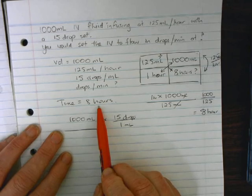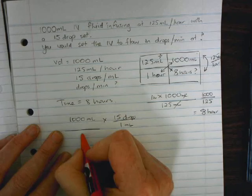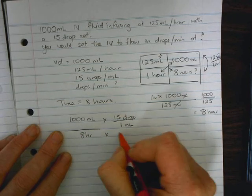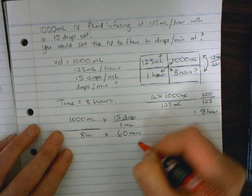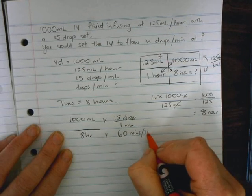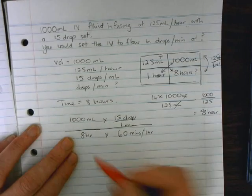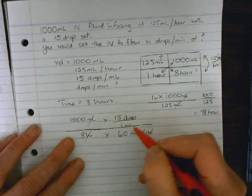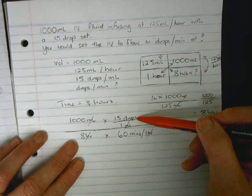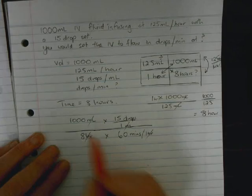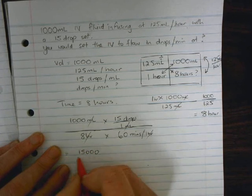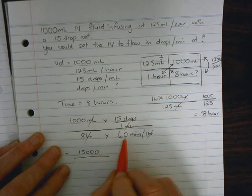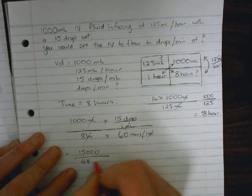And this is over our time in minutes, so 8 hours times 60 minutes, and it's 60 minutes per 1 hour. We can cancel our hours, cancel our mL, and our answer will be in drops per minute. 1000 times 15 is 15,000, and 8 times 60 is 480 minutes.